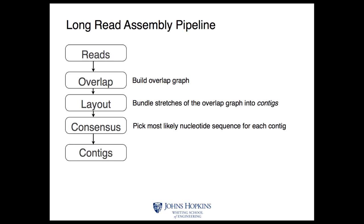OLC assemblers take in your sequencing reads as input. They first find overlaps between reads and construct an overlap graph. They then process that overlap graph to compute a layout of the reads — the ordering of reads along the genome. They then calculate a consensus sequence to overcome the high error rate. The output is contigs: stretches of the genome assembled into one piece. Contig is short for contiguous sequence — a sequence of reads merged together into some segment of the genome.